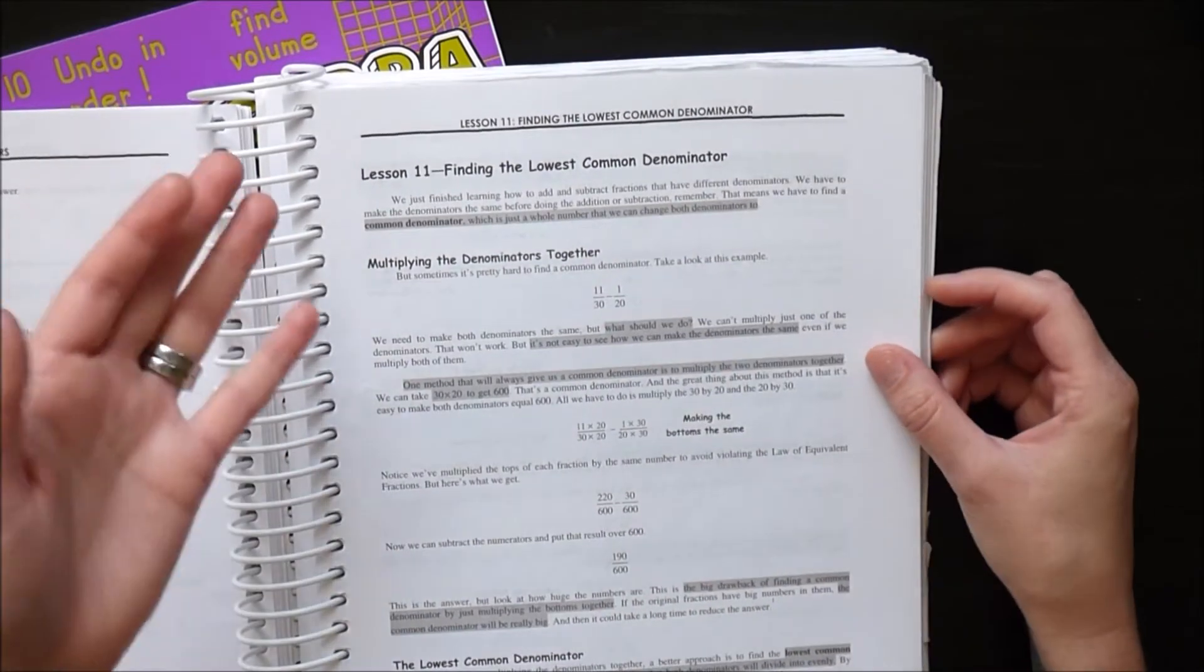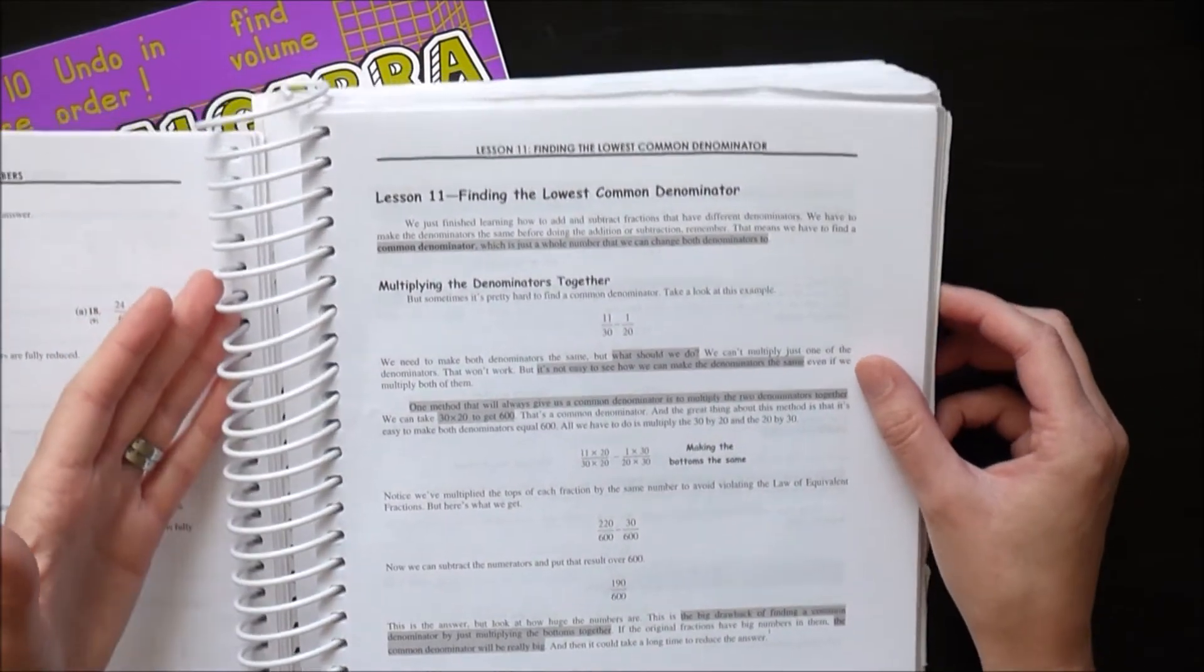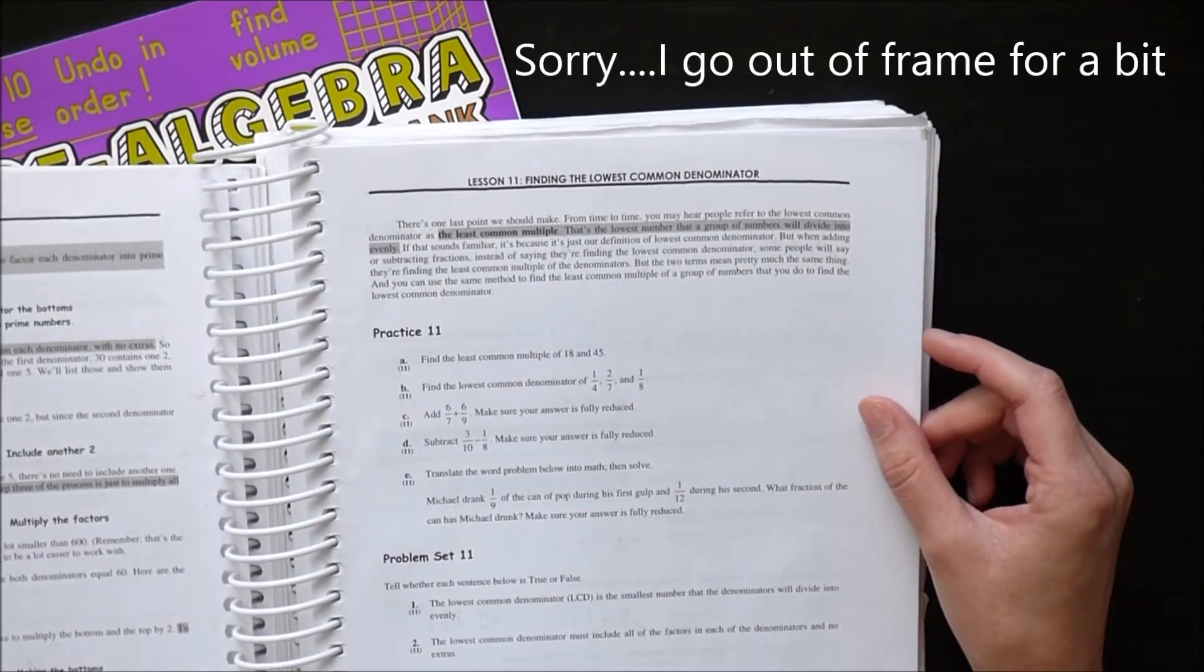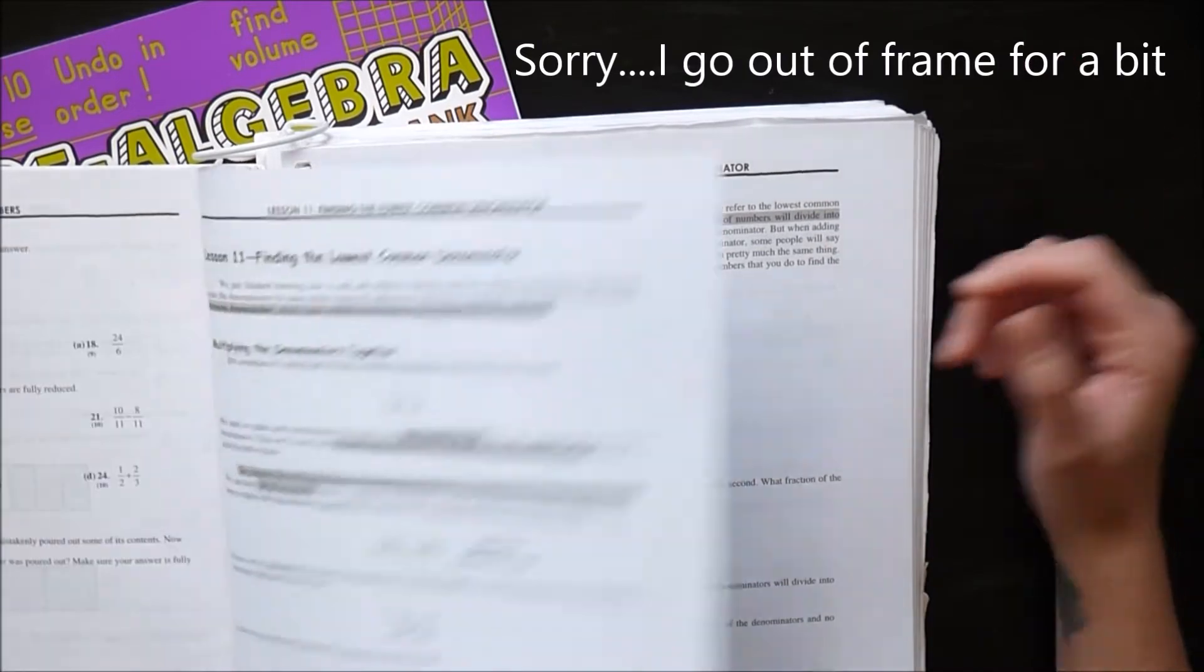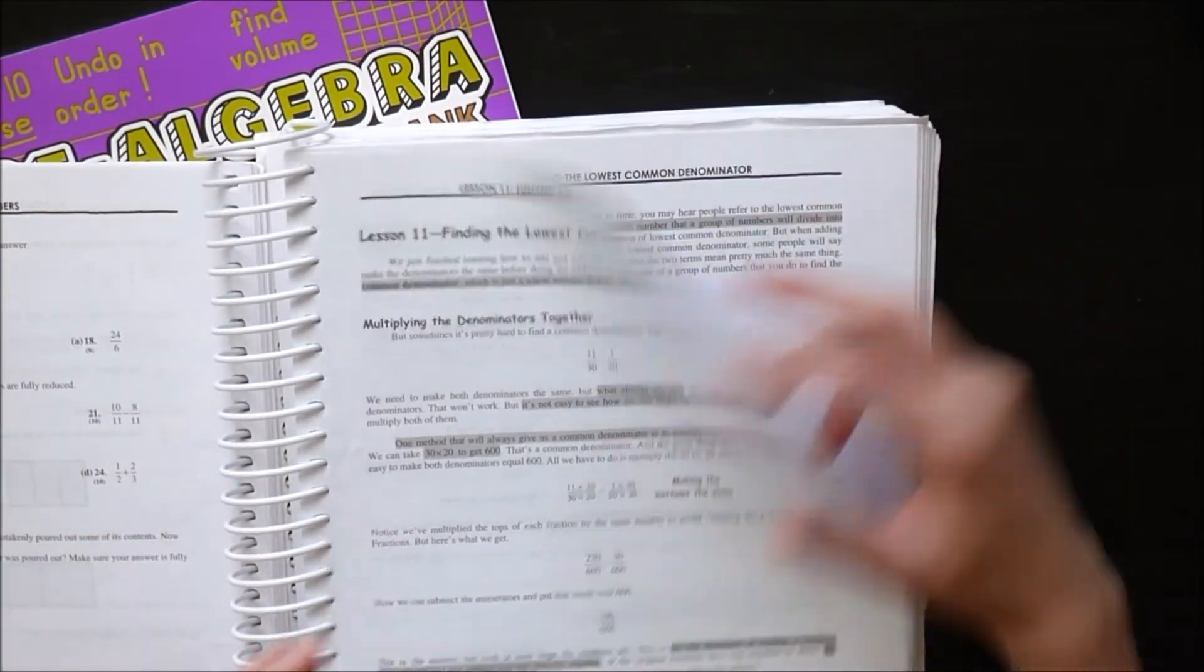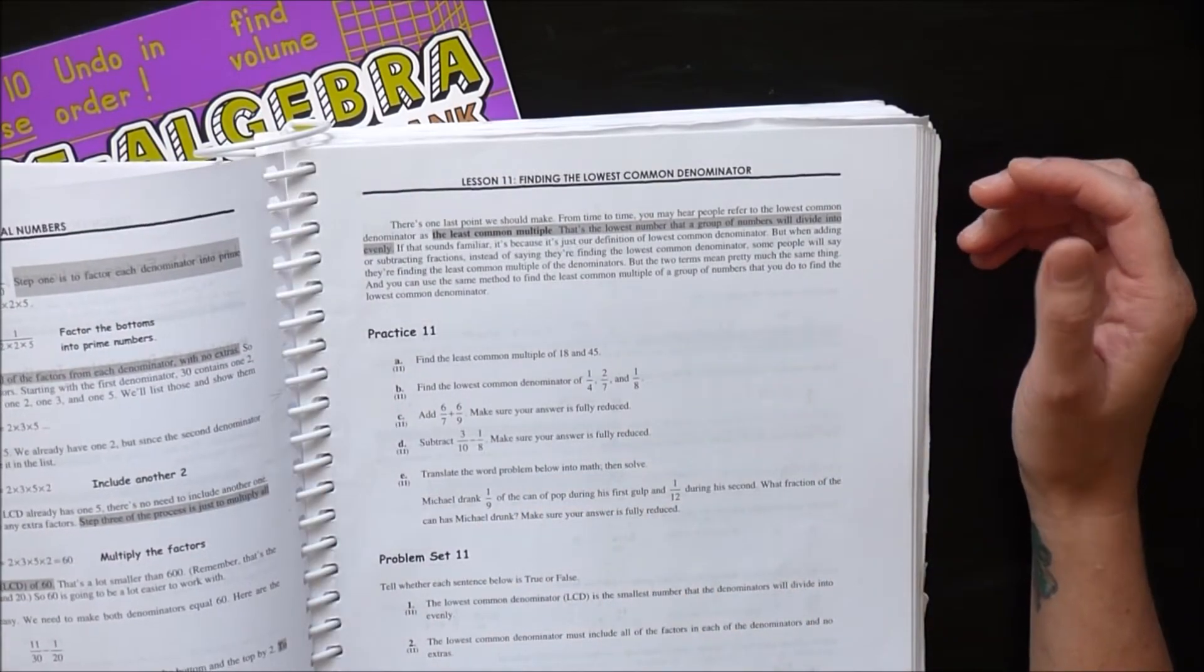So for lesson 11, finding the lowest common denominator, we've got literally a full page back and front and a little bit on the second just talking about how you can multiply them together, finding the lowest common denominator, and it walks you through absolutely everything. So I do love that they do that.